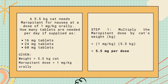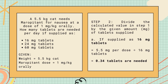We have the given: the weight of the cat is 5.5 kilograms and the dose of maropitant is 1 milligram per kilogram orally. For step 1, multiply the maropitant dose — 1 mg/kg — by the cat's weight — 5.5 kg. For step 2, divide the calculated value in step 1 by the given amount of tablets supplied. For letter A, if supplied as 16 mg tablets: dividing 5.5 mg by 16 mg gives 0.34 tablets.